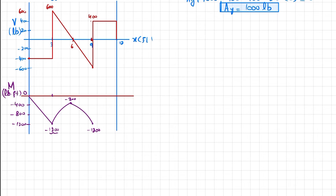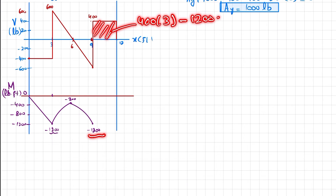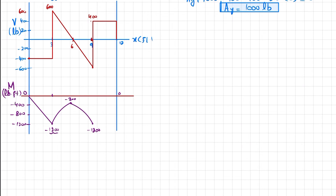The last area is 400 times 3 equals 1200, which is positive. So minus 1200 plus 1200 equals zero - the moment returns to zero at the end. Since the shear force in this region is a horizontal line, the bending moment is a first-degree (straight) line with increasing slope. This completes both the shear force and bending moment diagrams.